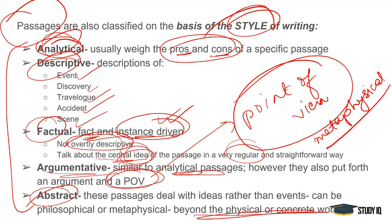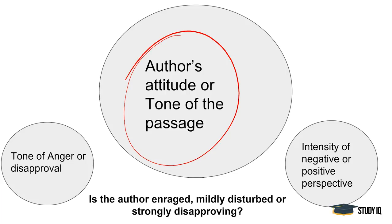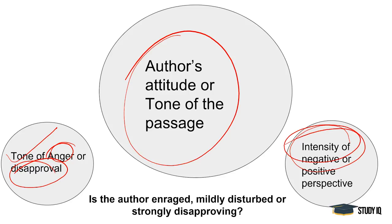Regarding the author's attitude and tone of the passage, this is also something we have to identify. Is the tone one of anger? Is the tone of disapproval? Is there intensity, positivity or negativity? Is the author enraged — is there a lot of anger? Is the author a little disturbed? Or is there a lot of criticising or disapproving? You should know the tone of the author and its intensity.